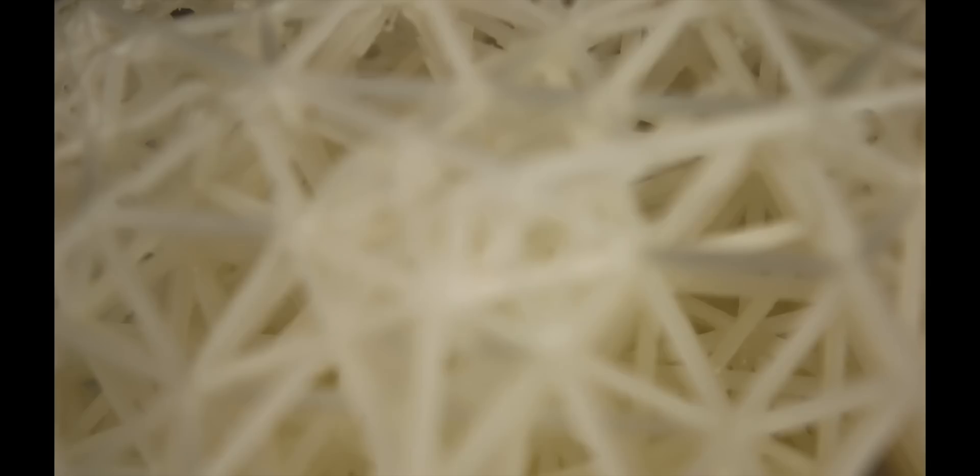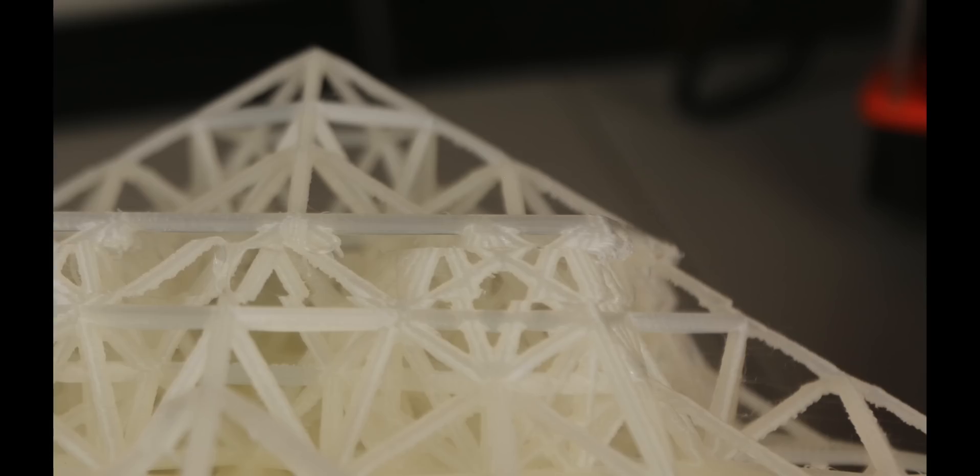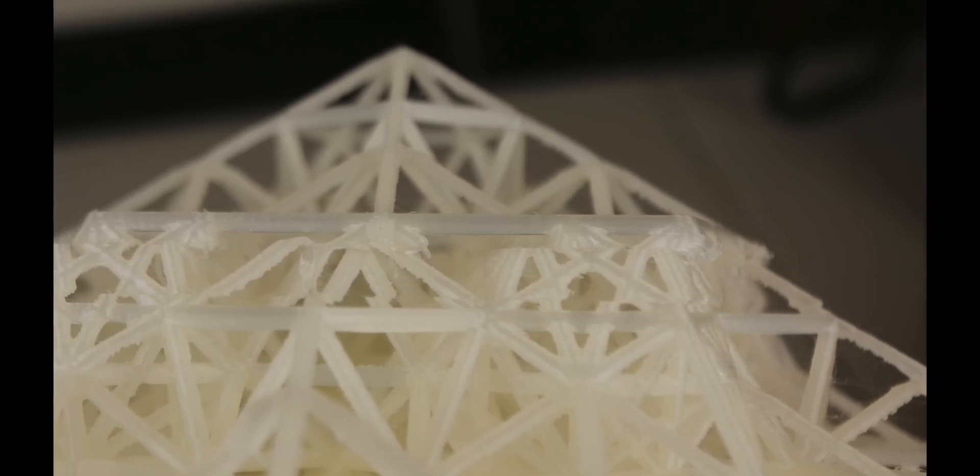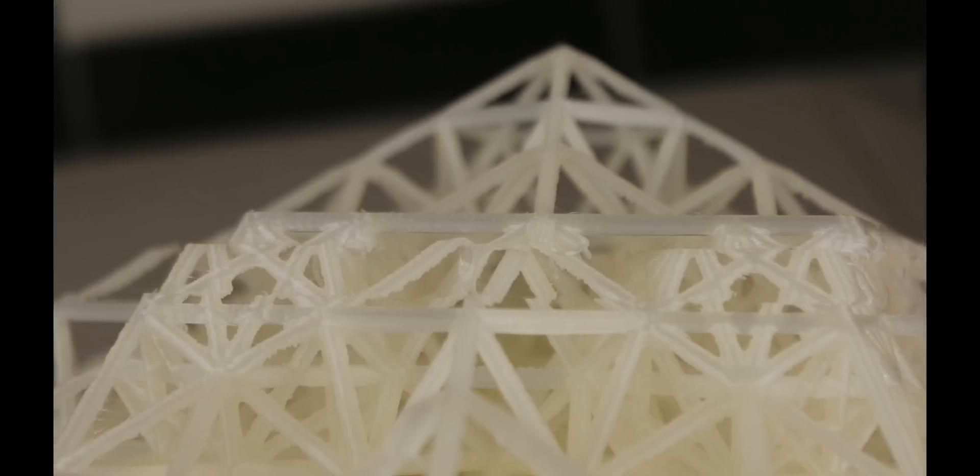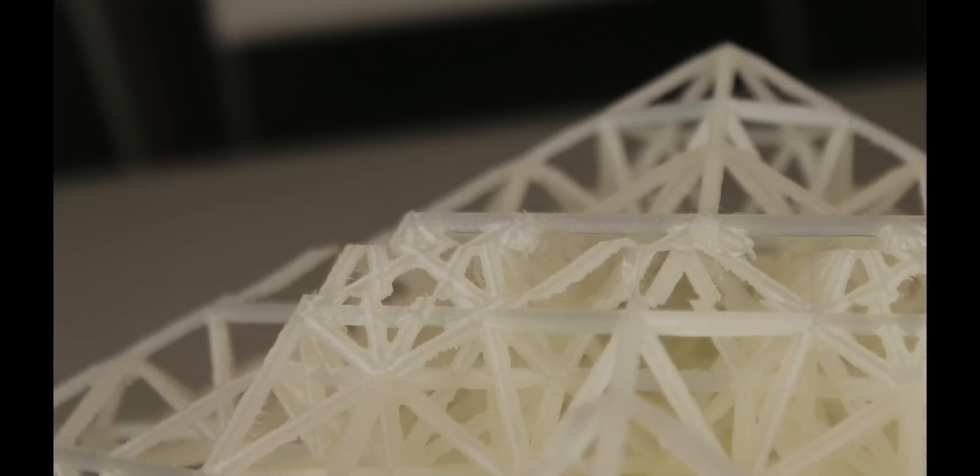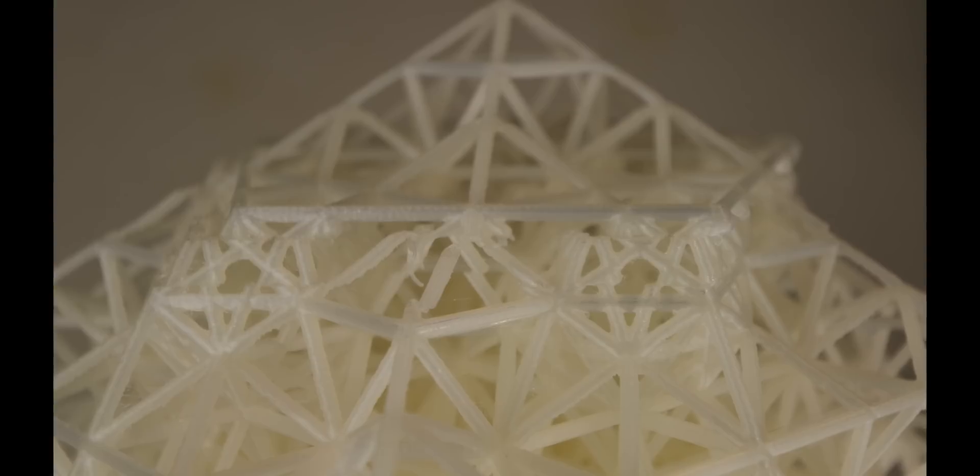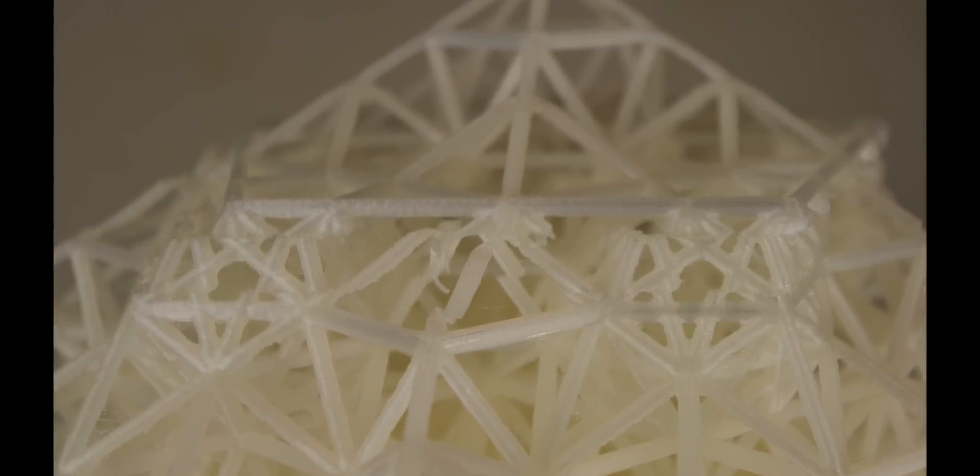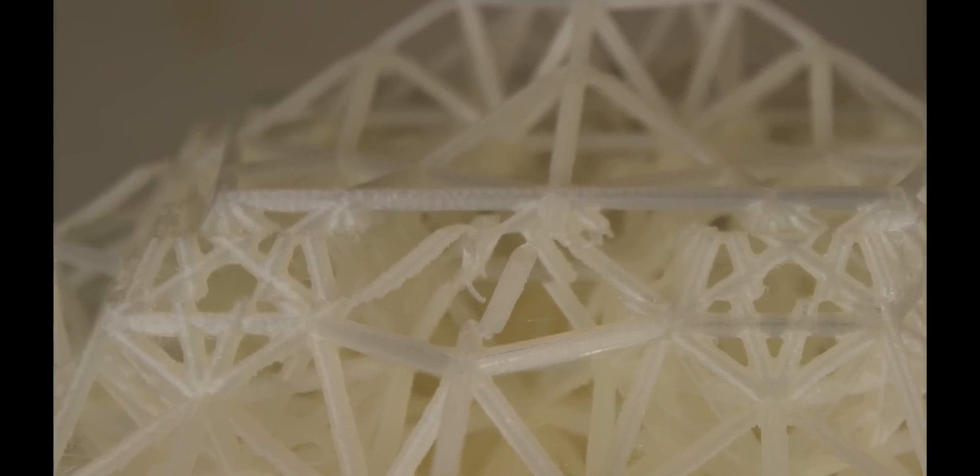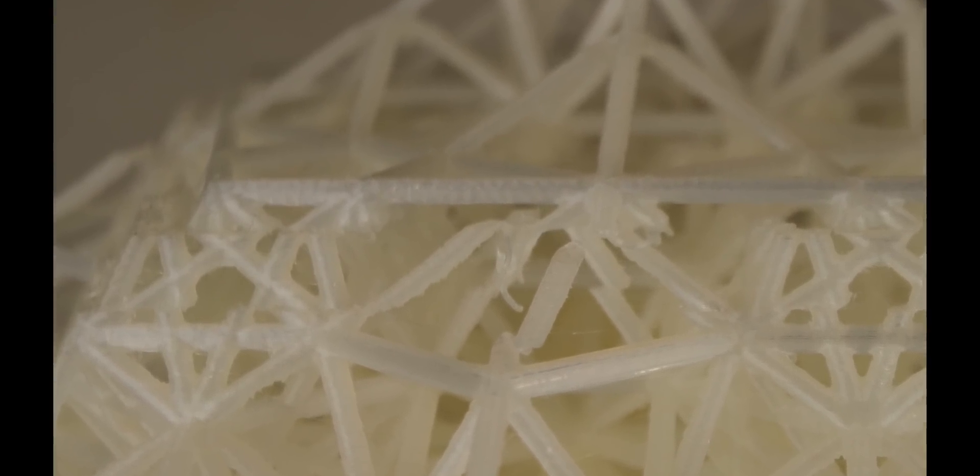There's actually one point when the model where the layer actually staggered and I can only assume that the extruder or the probe itself hit the model and then that prevented the extruder from moving across and then gave me a staggered layer. And again, this is all to do with the way that the pin probe is placed at such an acute angle to the nozzle.